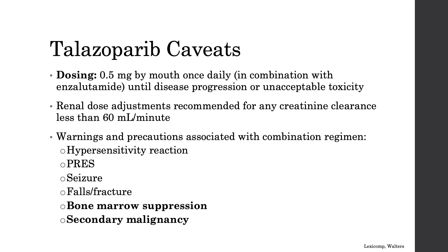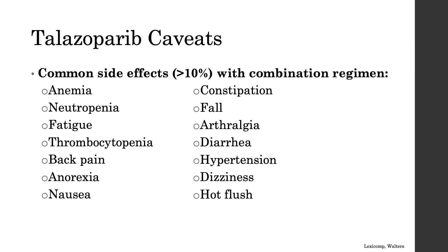Talazoparib is dosed 0.5 mg by mouth once daily in combination with enzalutamide, with renal dose adjustments recommended for creatinine clearance less than 60 mL/min. Main warnings include bone marrow suppression and secondary malignancy, with additional combination-related warnings of hypersensitivity reaction, PRES, seizure, and falls or fracture — the latter more associated with the enzalutamide component. Common side effects include anemia, neutropenia, fatigue, thrombocytopenia, back pain, anorexia, nausea, constipation, fall, arthralgia, diarrhea, hypertension, dizziness, and hot flush.